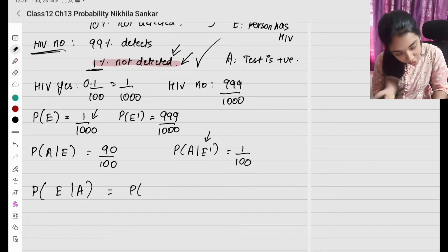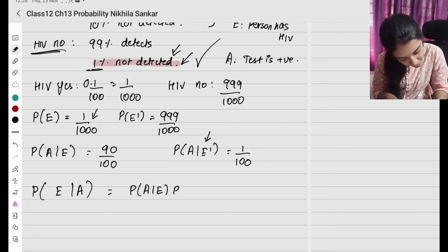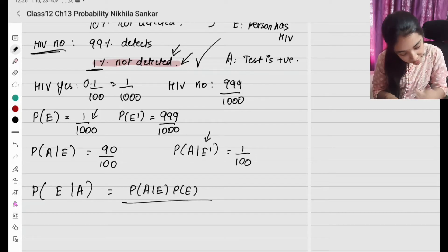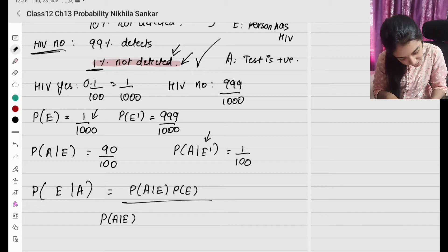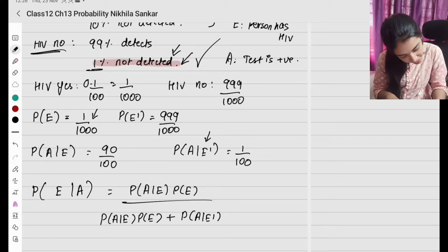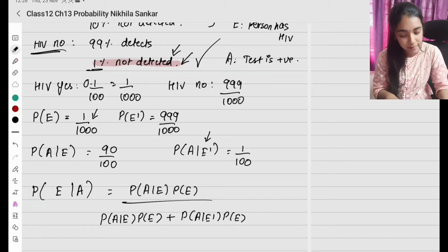Using the formula, we need probability of A given E times probability of E, the whole divided by probability of A given E times probability of E, plus probability of A given E-dash times probability of E-dash.